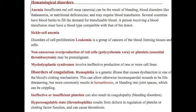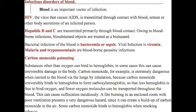Blood is an important vector of infection — meaning the blood can carry a disease and transmit it to another person. HIV, the virus that causes AIDS, is transmitted through contact with the blood, semen, or other body secretions of an infected person. Hepatitis B and C are primarily transmitted through blood contact. Bloodborne infections and blood-stained objects are all treated as a biohazard. Bacterial infection of the blood is called bacteremia or sepsis; a viral infection of the blood is called viremia. There are also blood-borne parasitic infections such as malaria and trypanosomiasis.